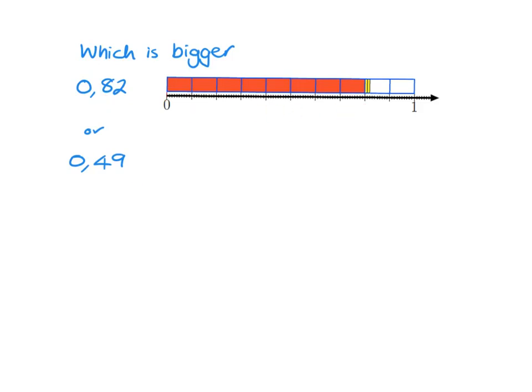What about 0.49? Well, I've got 4 tenths and then 9 of these little hundredths pieces. Now, it's very obvious that this 0.82 is bigger than 0.49. And, in fact, all I'd need to look at is what was happening in the tenths place here.